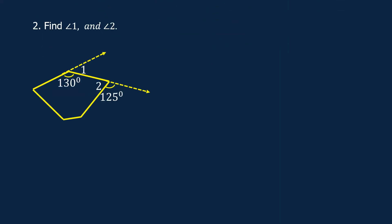Problem number 2: Find angle 1 and angle 2. In the figure, angle 1 is an exterior angle and angle 2 is an adjacent interior angle. Let us first solve for angle 1. This is angle 1, and this is the adjacent interior angle with a measure of 130 degrees. Exterior angle plus adjacent interior angle of a polygon is equal to 180 degrees. Therefore, angle 1 plus 130 degrees is equal to 180 degrees.